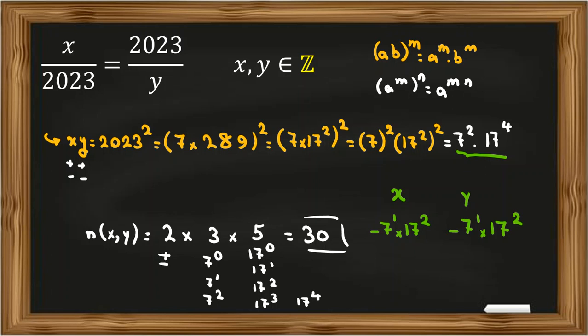Or for example, if it is 7 squared times 17 cubed, then you say y is also positive, doesn't have 7, it's 17. Like this, if you determine x, as you saw, y will be determined, and the number of answers for x and y equals 30.